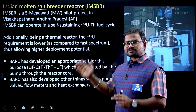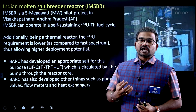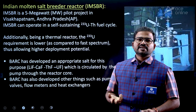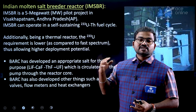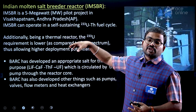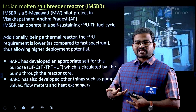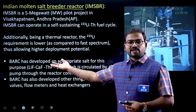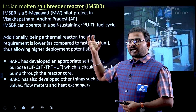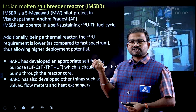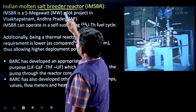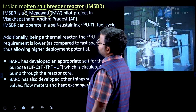The molten salt breeder reactor speciality is that while normal water boils out at 100 degrees centigrade, the molten salts can absorb bulk amounts of heat at much higher temperatures. This equalized temperature in the salts allows efficient hydrogen production. The Indian Molten Salt Breeder Reactor is a 5-megawatt capability pilot project, and Andhra Pradesh is the location where it will operate.